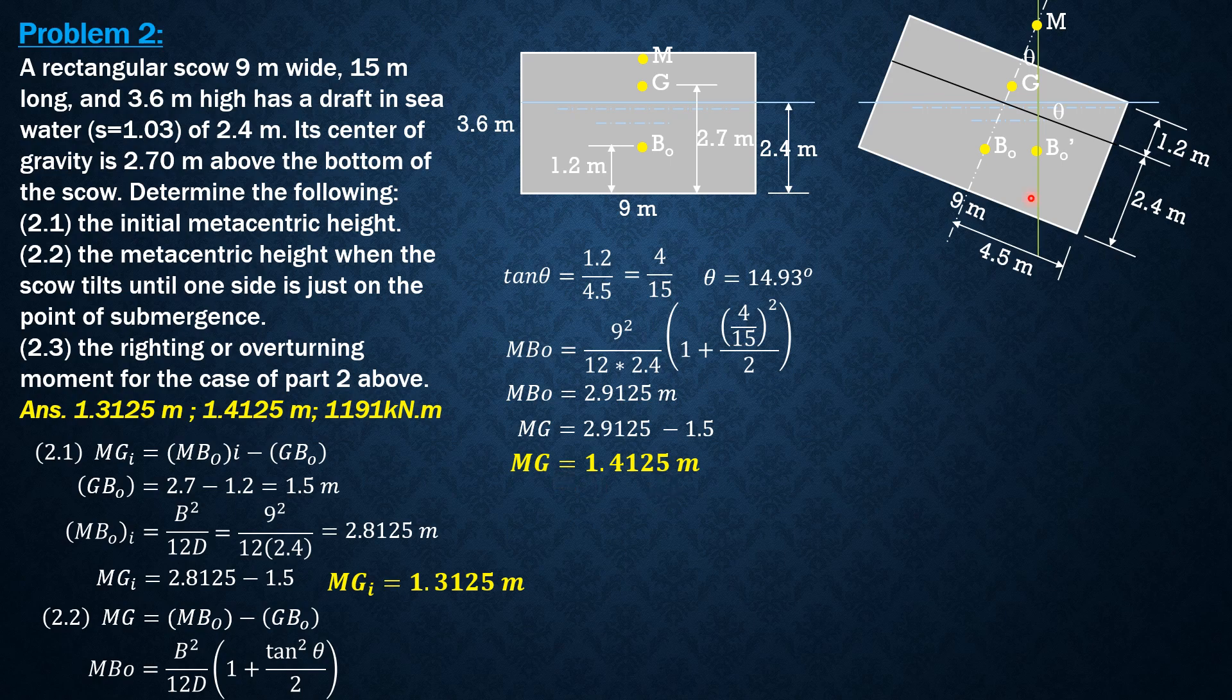Since metacentric height is positive, or metacenter is above G, the couple that develops between the buoyant force and the weight is a righting moment or righting couple. The righting couple is simply buoyant force times the moment arm.